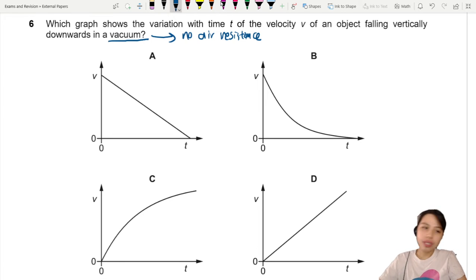Without thinking about any equations, just think about this. A ball is falling down. Is it getting faster and faster or slower and slower? It's getting faster and faster. Speeding up. So that means just by that thought alone, we should be able to cancel out A and B.